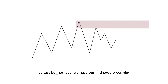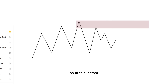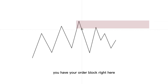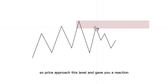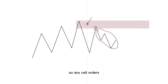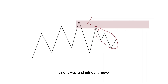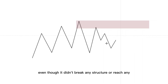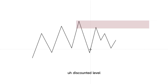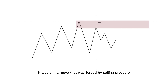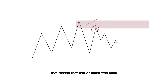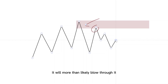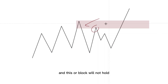Last but not least, we have our mitigated order block. In this instance, you have your order block right here and this order block has already been mitigated, which means it's been used. Price approached this level and gave you a reaction. So any sell orders that were sitting in this order block were already used for this major move. It was still a move that was forced by selling pressure. The fact that we can say sell orders were injected here means this order block was used. So when price does approach this level again, it will more than likely blow through it and this order block will not hold.